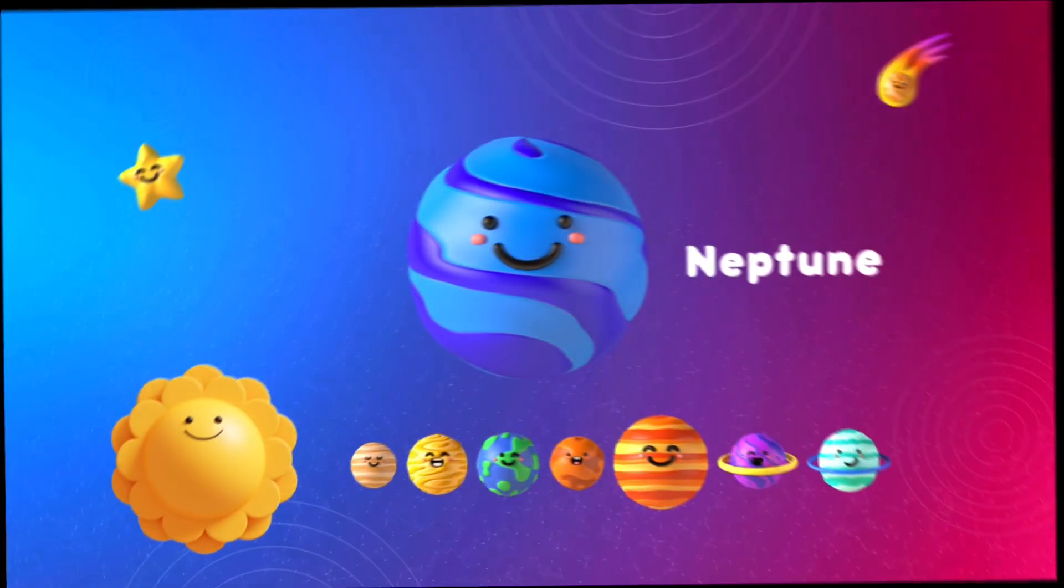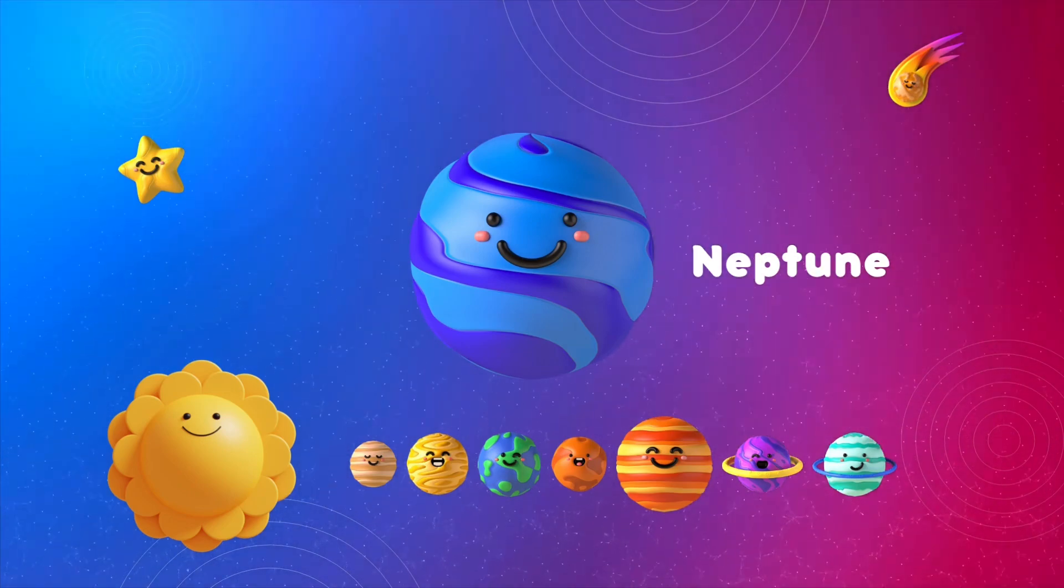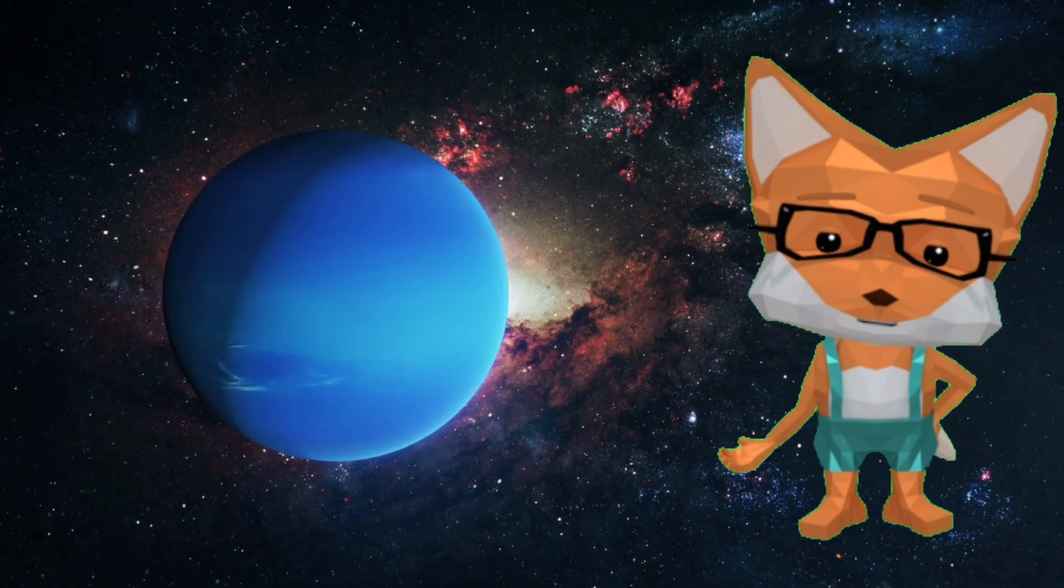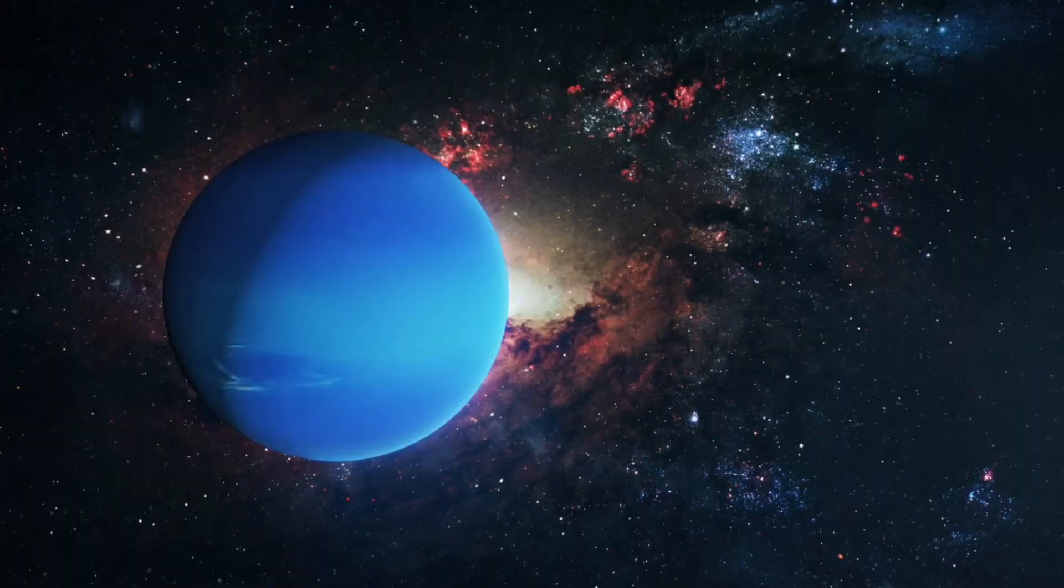The last planet is Neptune. Neptune is like a big blue ice cream cone, far away from the sun. It's the last planet from the sun. Neptune goes around the sun the slowest.